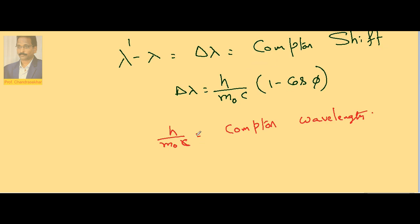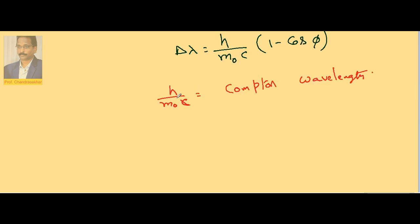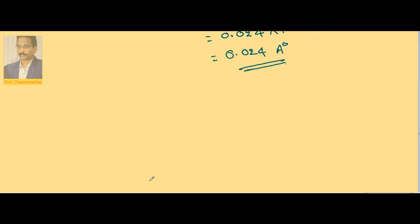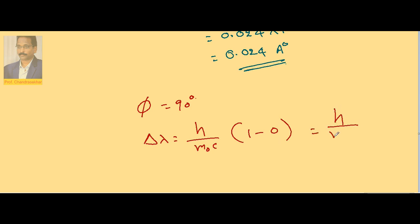Delta lambda is the Compton shift and h / m₀c is the Compton wavelength. Here h is Planck's constant, m₀ is the rest mass of the electron, and c is the velocity of light. The value of h / m₀c is 0.024 × 10⁻¹⁰ meters, or 0.024 Angstrom. For the special case phi = 90°, delta lambda = h / m₀c × (1 − cos 90°) = h / m₀c × 1 = 0.024 Angstrom, which equals the Compton wavelength.